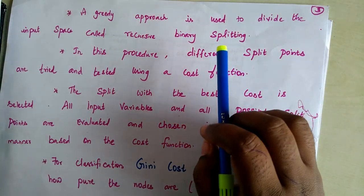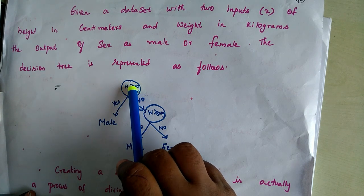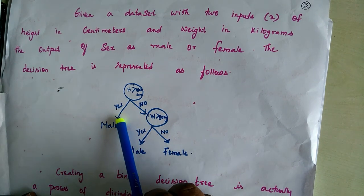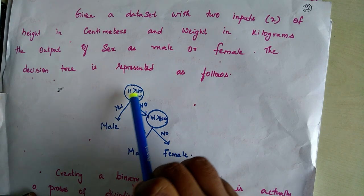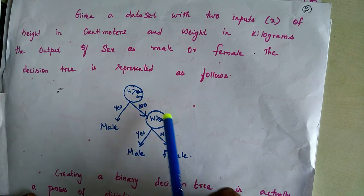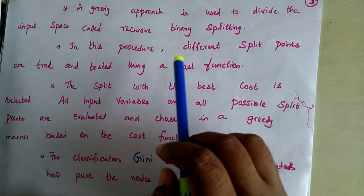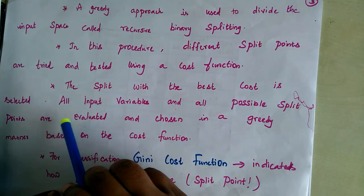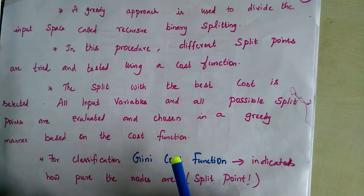Today we will see the Gini cost function, which helps arrange attributes as split point nodes. For example, we could have chosen weight as the root node, but height was chosen because it gave a lesser cost. When height was greater than 180 cm, we could directly predict the person is male, with confusion only when height is less than 180. That is why height was chosen as the primary split point — this is determined by the Gini cost function.